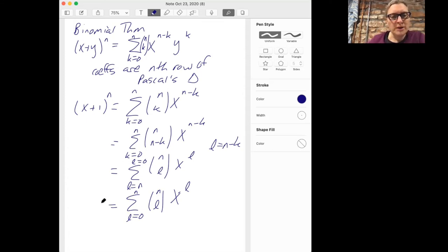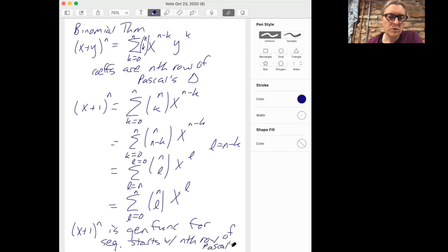So maybe I made that a little more complicated than it needs to be. But the conclusion is that this function (x+1) to the n is the generating function for the sequence which starts with the nth row of Pascal's triangle. And so you can think about what we just did on the previous slide with the explanation about why this is the generating function being essentially another proof of the binomial theorem.